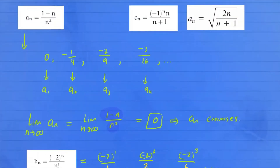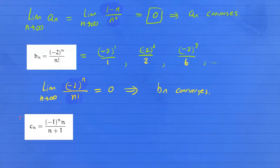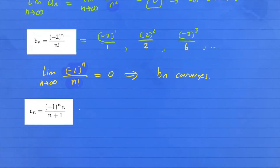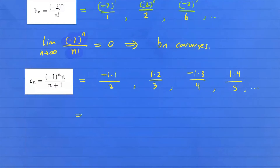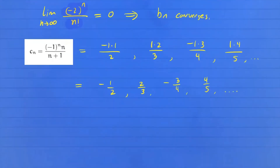Now let's look at sequence c_n. If we write down some terms: when n equals one, you have negative one to the first power times one over two, which is negative one half. When n equals two, you have positive one times two over three, which is positive two thirds. When n equals three, negative one times three over four, which is negative three fourths. The next term is positive four fifths, and so on — negative, positive, negative, positive.